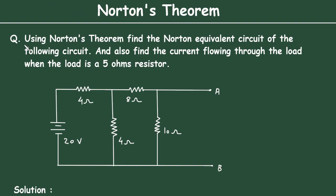Norton's theorem question: using Norton's theorem, find the Norton equivalent circuit of the following circuit and also find the current flowing through the load when the load is a 5 ohm resistor.